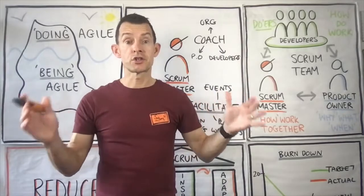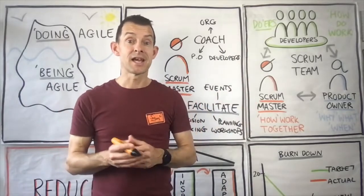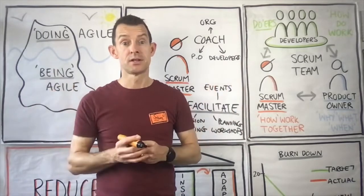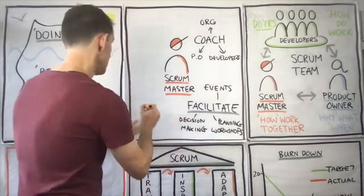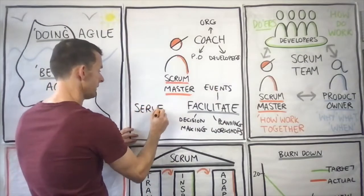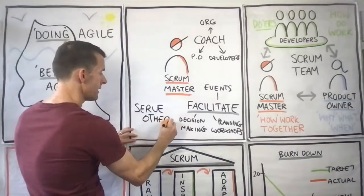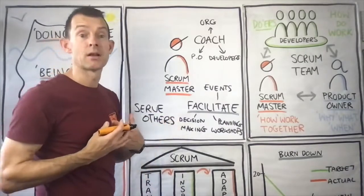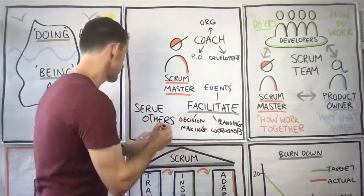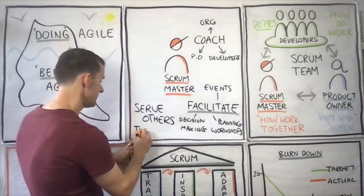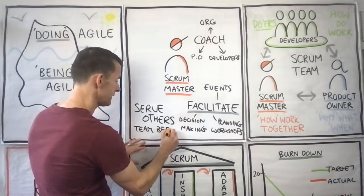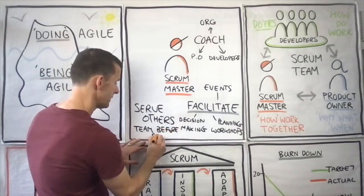The Scrum Master serves others — they are someone who puts the team before themselves. Serving others is a characteristic that is really important. It's not about me getting my name in the headlines as a Scrum Master; I want the team to take the success for the great work that we do. Team before self — that's what we mean by serving others.